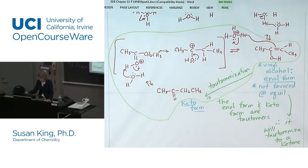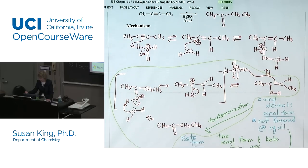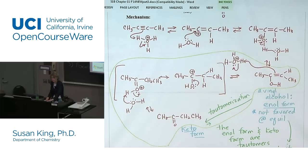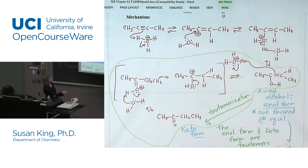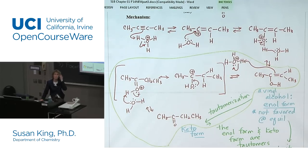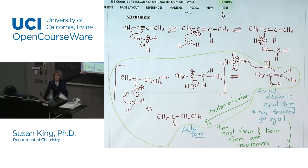Let's add up how many points this problem is going to be on midterm two. The way I do mechanisms is usually two points per step. Counting up the steps: two, four, six, eight — and I want to see both resonance structures — so ten, twelve, and then I want you to label the enol form and the keto form. That's 14 points on midterm two. That's the lowest score going to be on midterm two — if you want 14 points that's all you have to study.